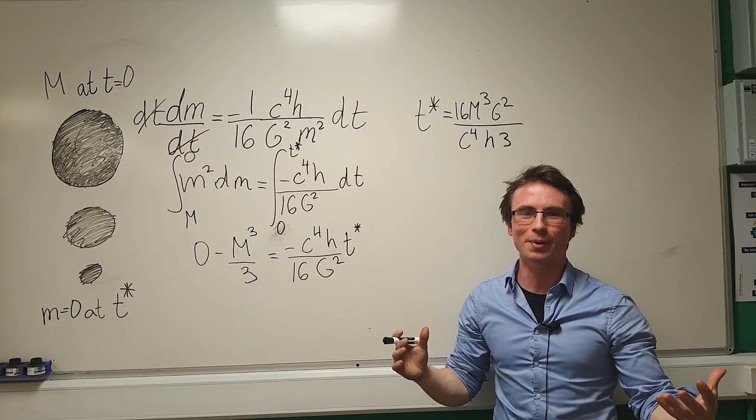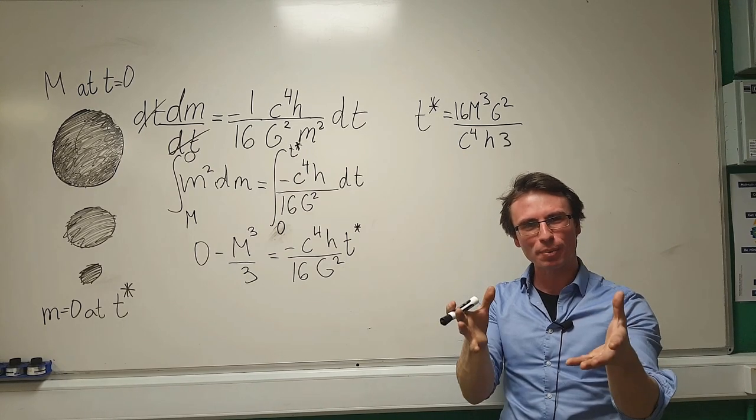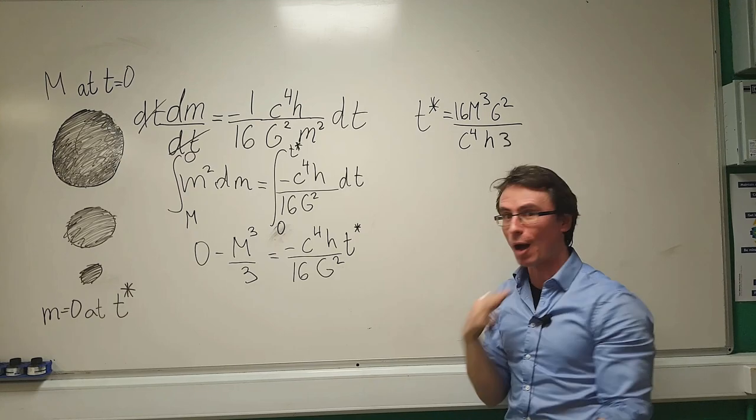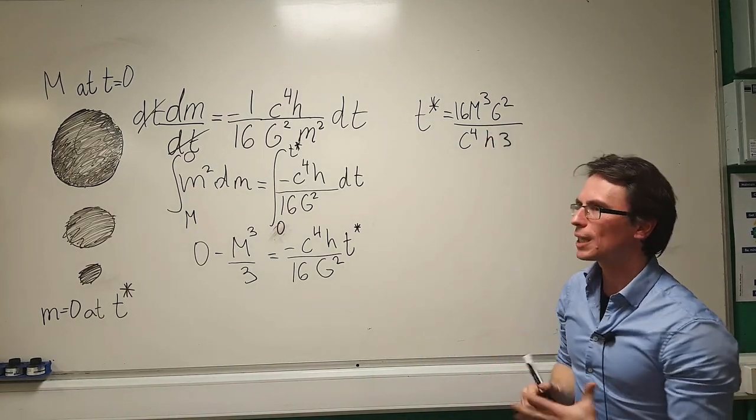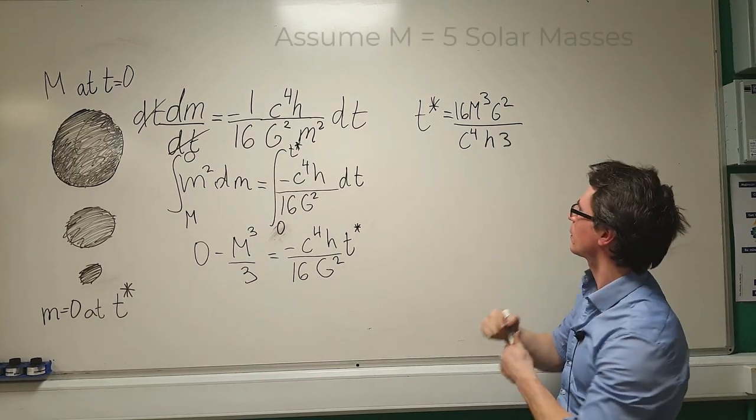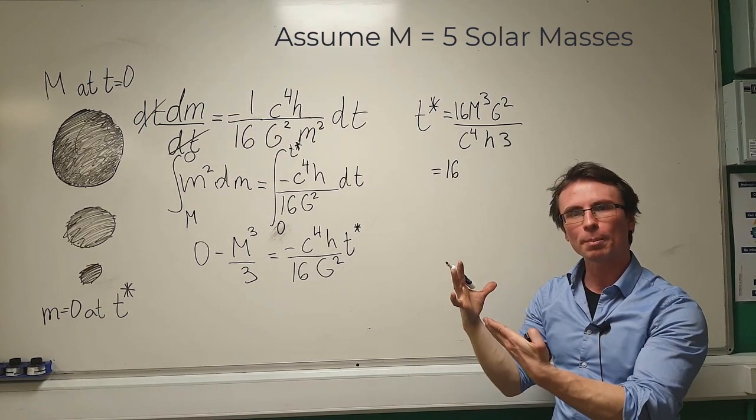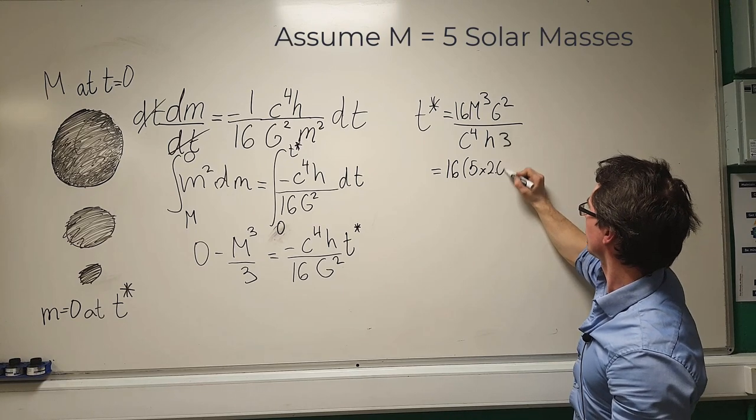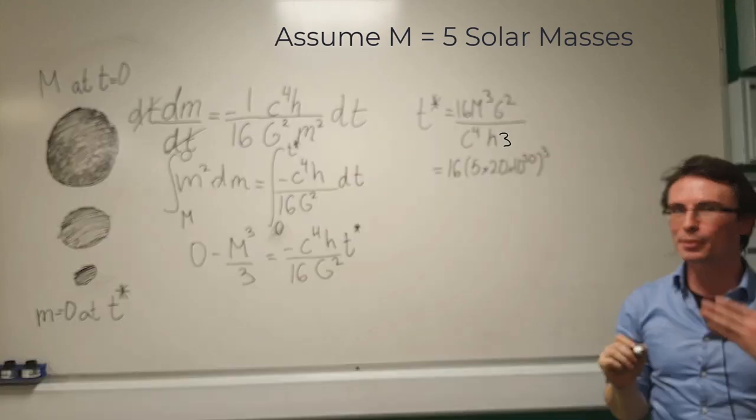Let's have some fun with this equation, let's plug in some values and actually calculate the evaporation time of a black hole and compare it with how about the age of the universe. In order to do that I'm going to need a typical mass of a black hole. I'm just going to take about five solar masses. Now the mass of the sun is about two times 10 to the power of 30 so this will be equal to five times 2.0 times 10 to the power of 30 and this is now cubed.